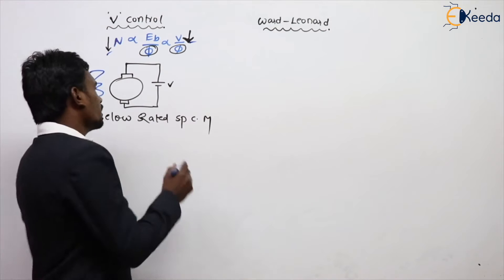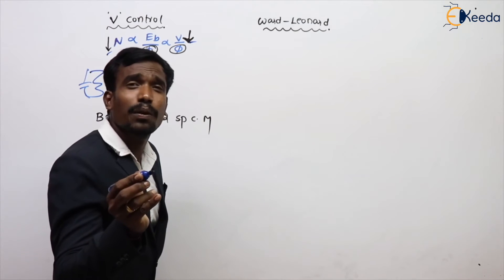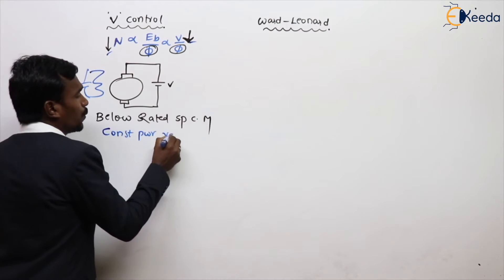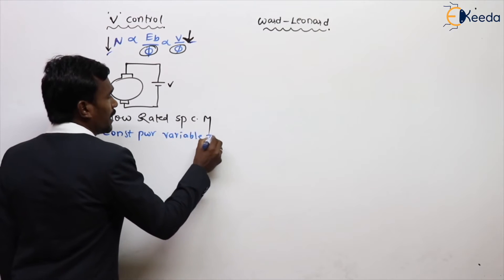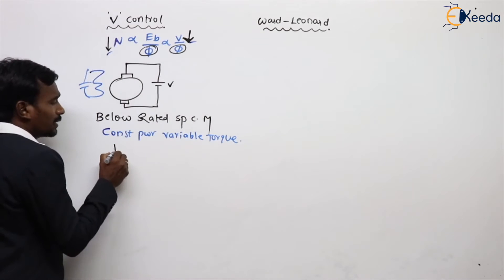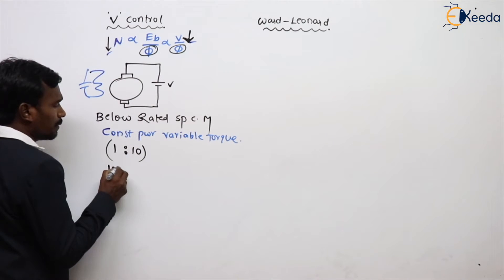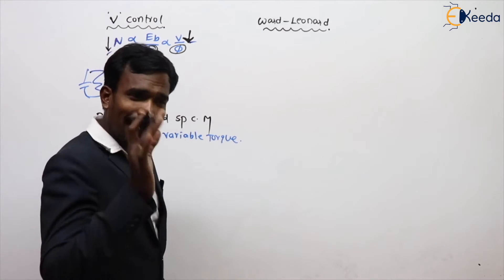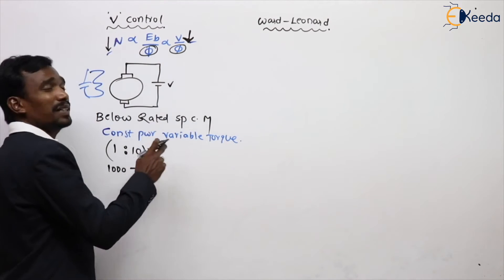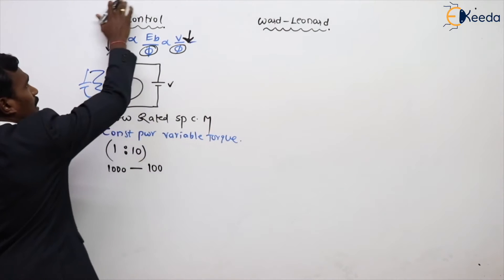This is a below rated speed control method. That's why this is also called a constant power variable torque drive. In this case, we can control the speed in the range of 1:10 — meaning 1000 RPM can be changed down to 100 RPM, because this is below rated speed, not above rated speed.